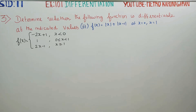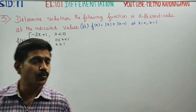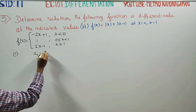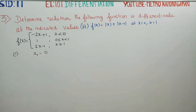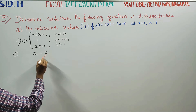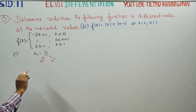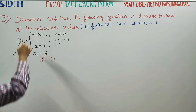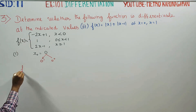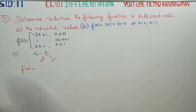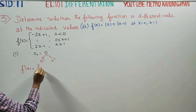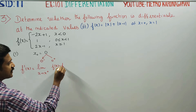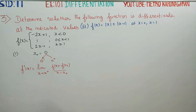Now we shall find the differentiability at x equal to 0 and x equal to 1. First part is x equal to 0. For differentiability, we check two directions: the left derivative and right derivative. If they are equal, it is differentiable. We use the formula: f dash of x equals limit as x turns to x0 of f(x) minus f(x0) by x minus x0.